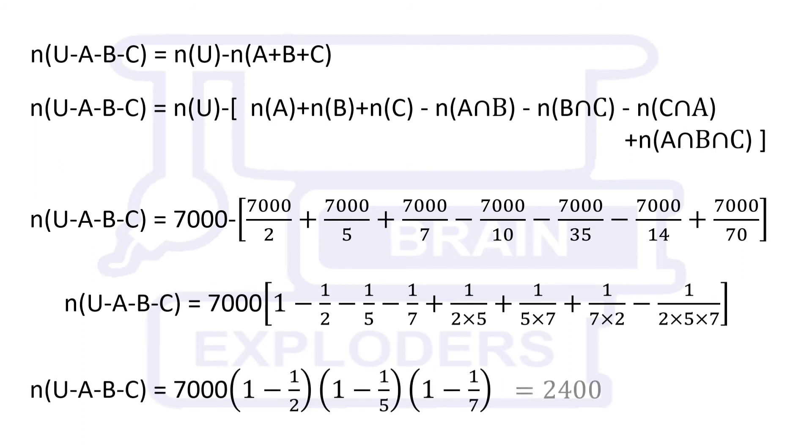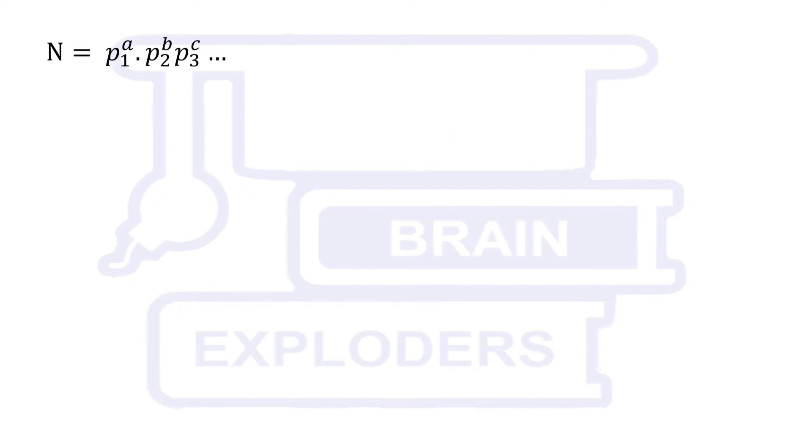For this particular case, we have 2400 positive integers less than 7000 which are relatively prime to it.